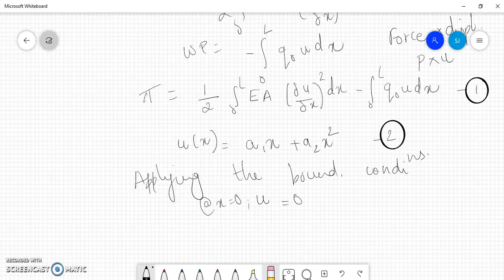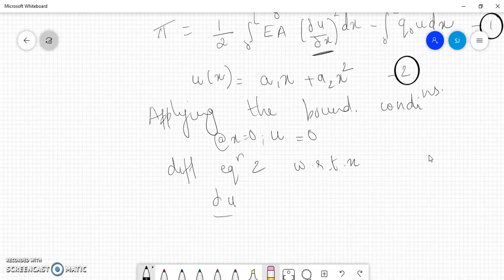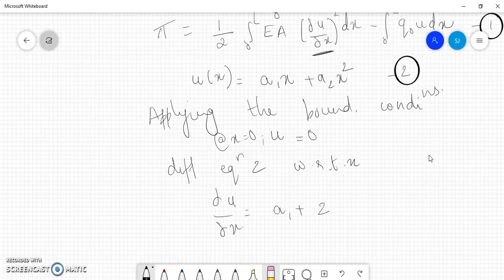Let us differentiate equation 2 with respect to x because in the potential energy equation, we need ∂u/∂x. So when we differentiate equation 2, we get ∂u/∂x equals a1 + 2a2x. I will substitute this in equation 1.